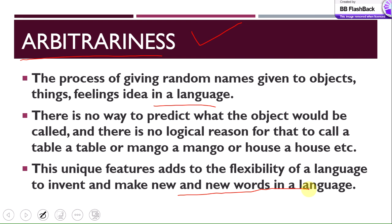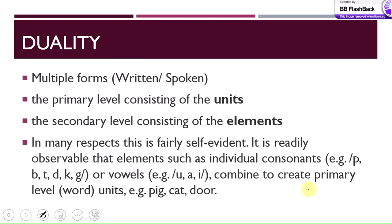Next is duality — multiple forms. As is clear from the name, duality refers to two things, like a dual-SIM phone where two SIMs can be operated in a single cell phone. Language has the property of duality: it exists in multiple forms. It can be written and spoken — so duality means language has these two levels: written and spoken.